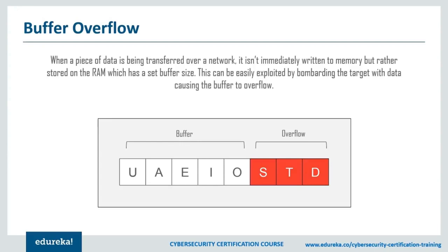If a programmer gets lazy and leaves off the format string, providing only the variable to be output, then an attacker has the ability to supply that format string. When that happens, the program starts picking the next piece of data off the stack and displaying it, allowing an attacker to read stack data and potentially find information like a return address. There is also a possibility of being able to inject data into the stack using this type of attack.